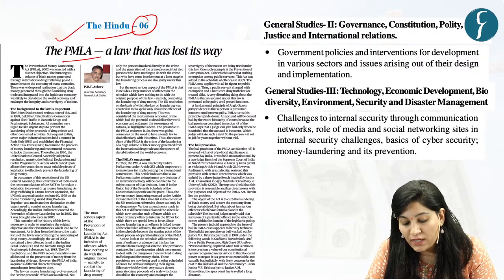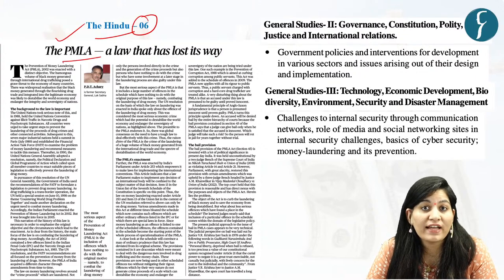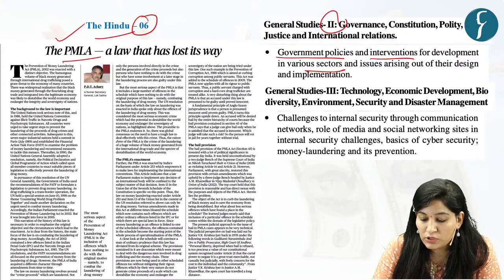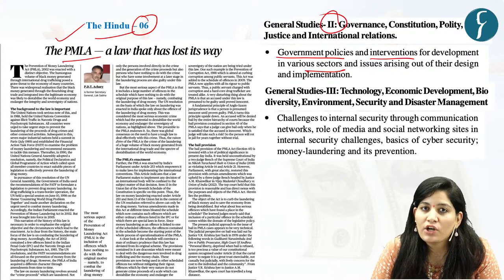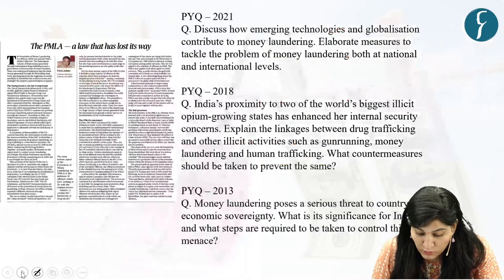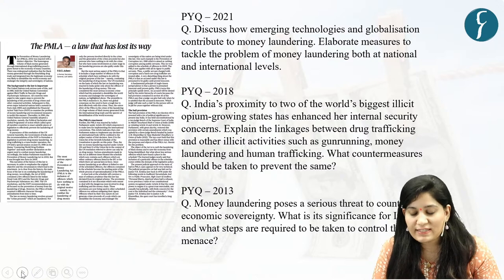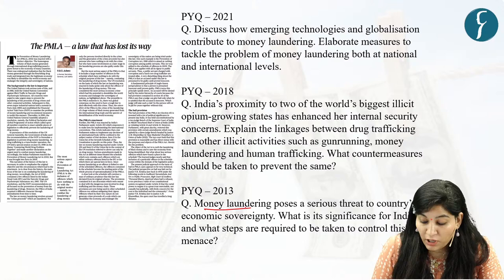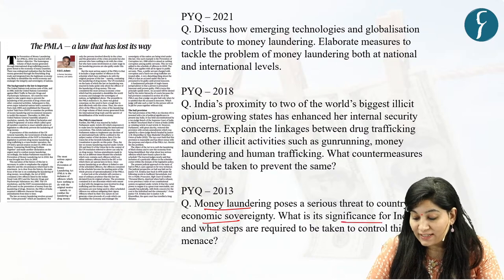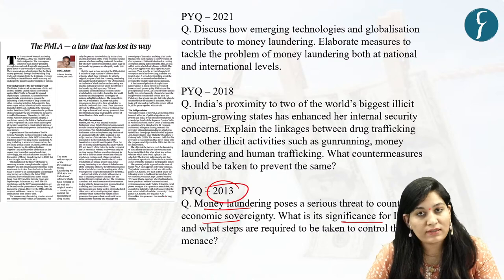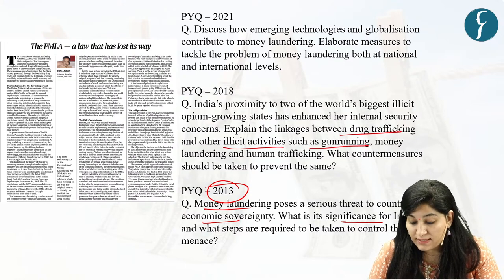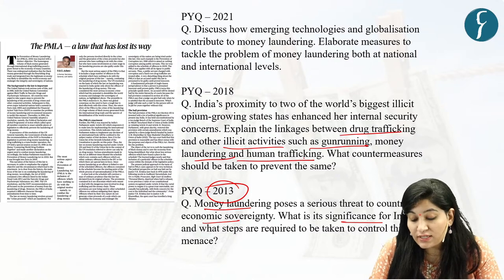In this discussion we will talk about Prevention of Money Laundering Act 2002, which is important under GS Paper 2 as government policies and intervention. Also money laundering is an important theme in GS Paper 3. UPSC has been asking questions on this theme: how money laundering poses a serious threat to the country's economic sovereignty came in 2013, interconnection between drug trafficking and money laundering came in 2018.